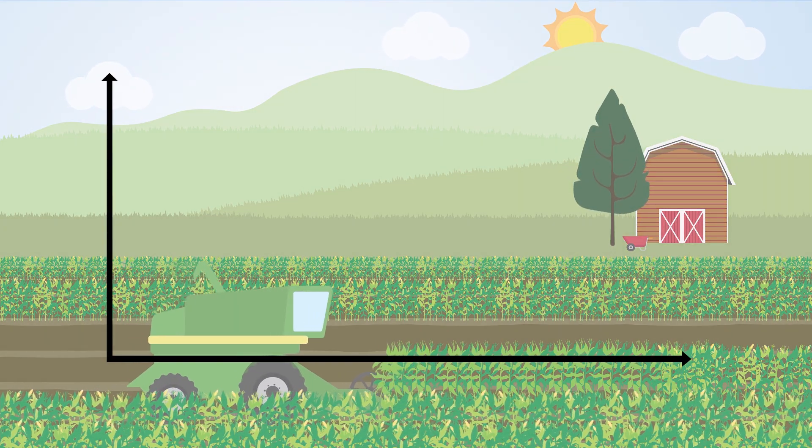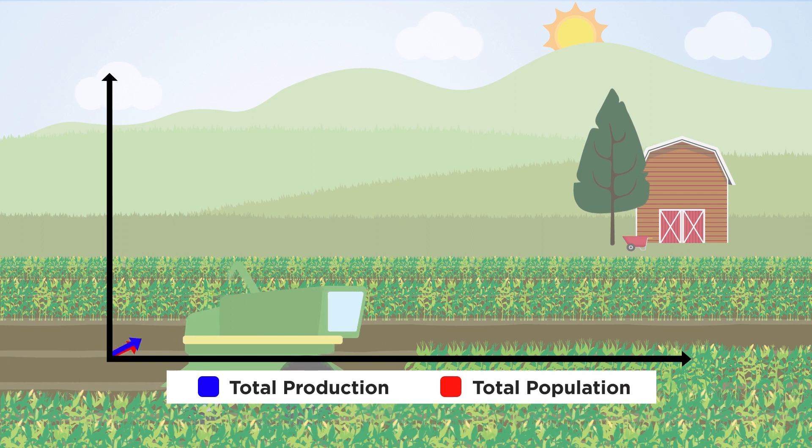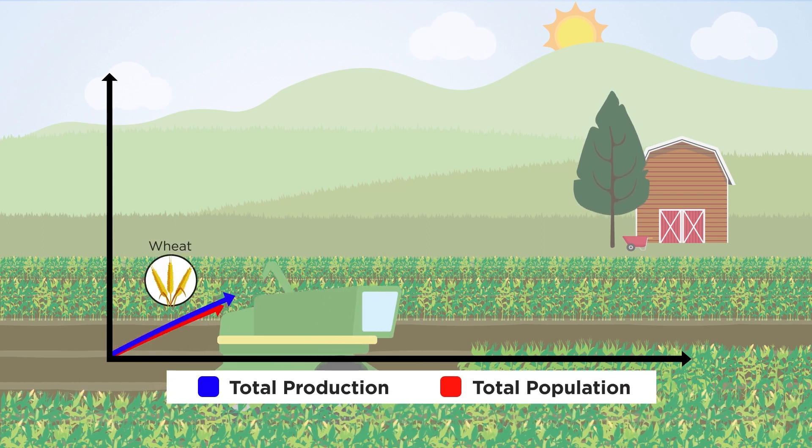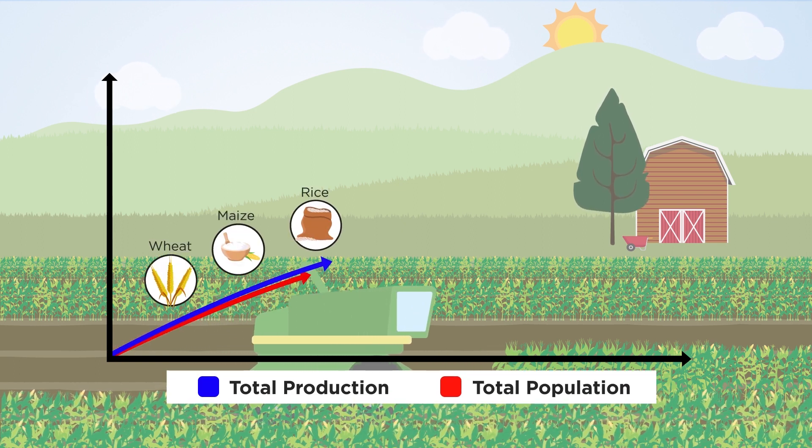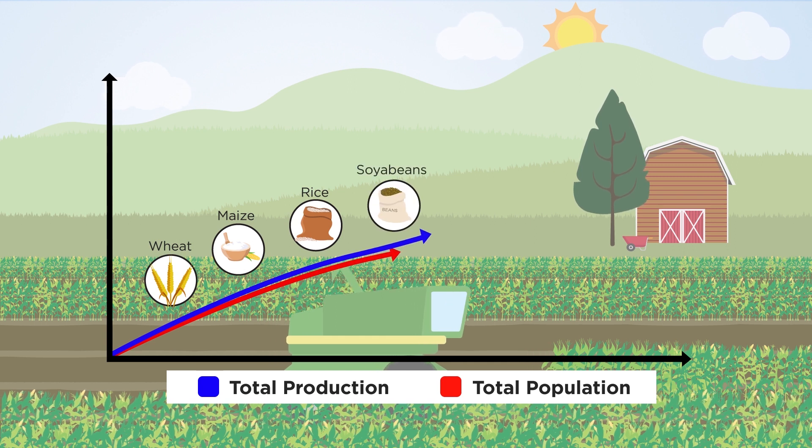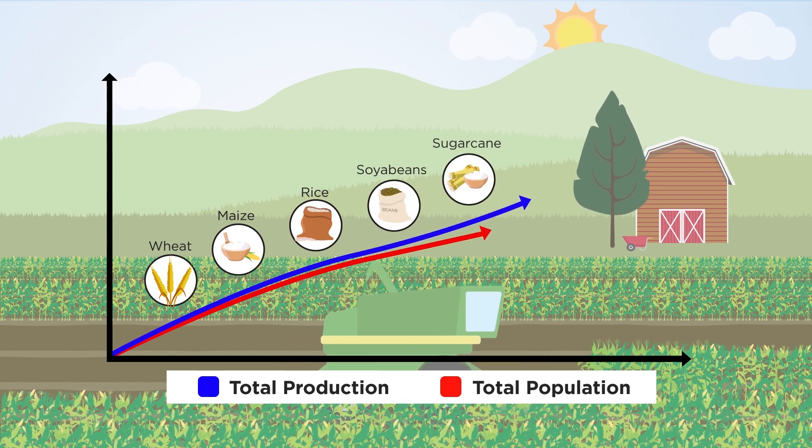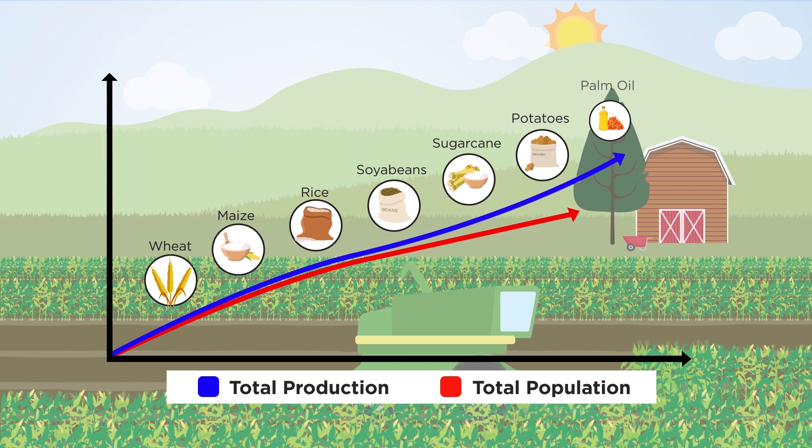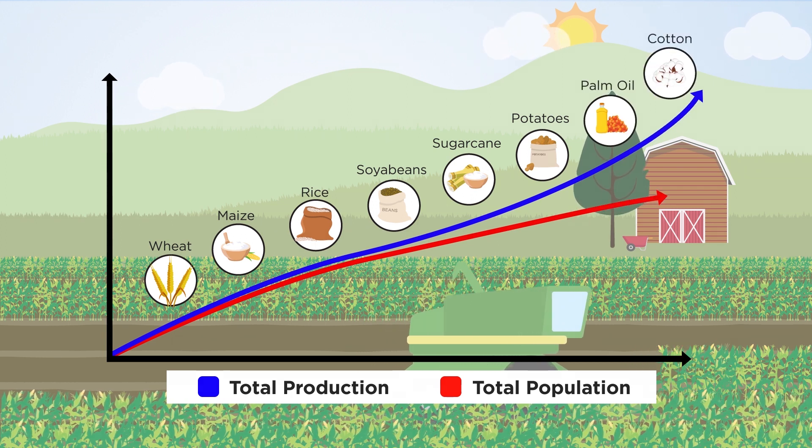Crops provide many food and non-food products that humans rely on for nutrition and well-being. Farming practices and scientific understanding keep increasing crop yield. As a result, agricultural production has even outpaced population growth. How could this happen?